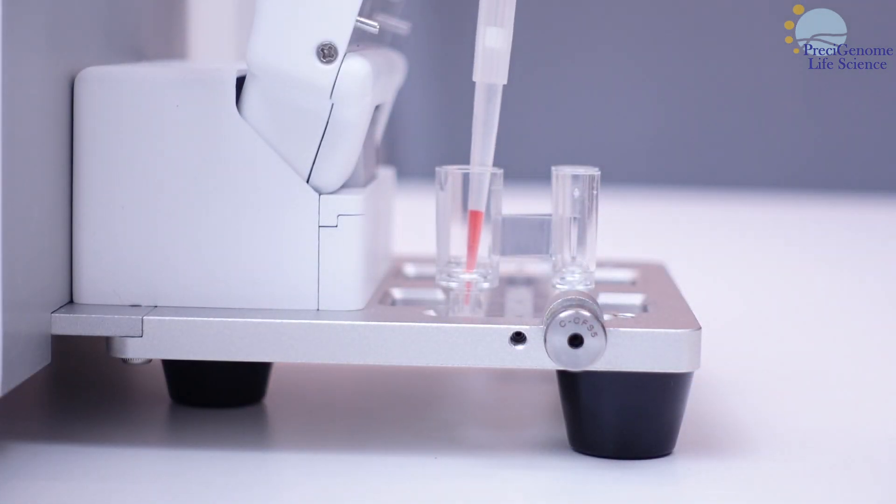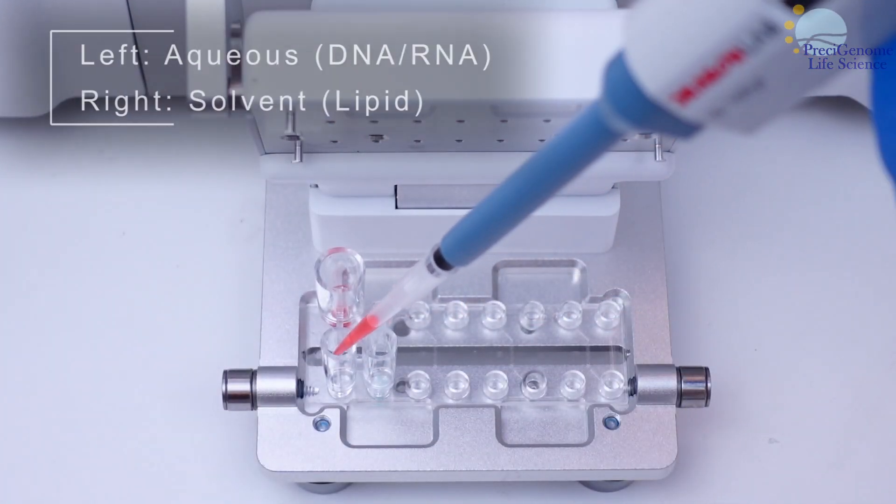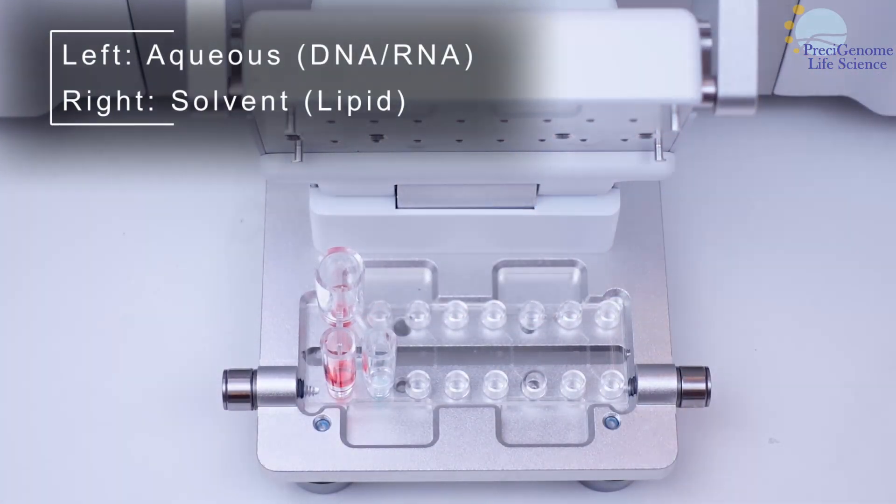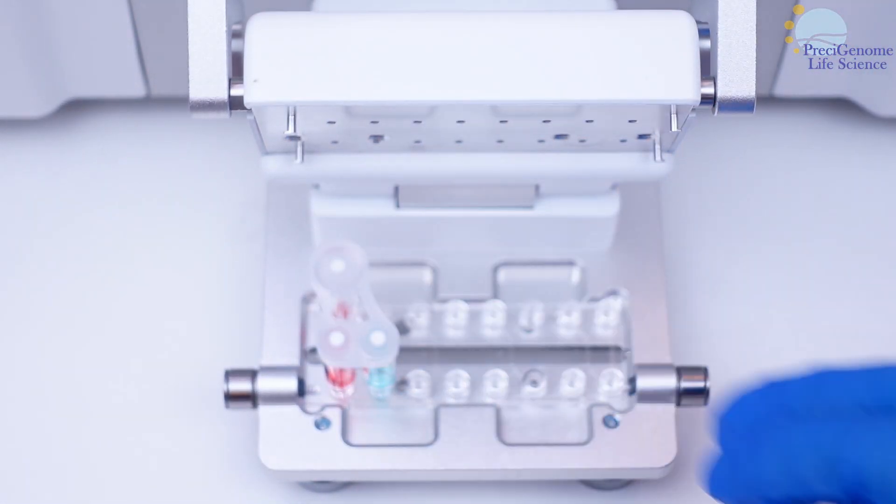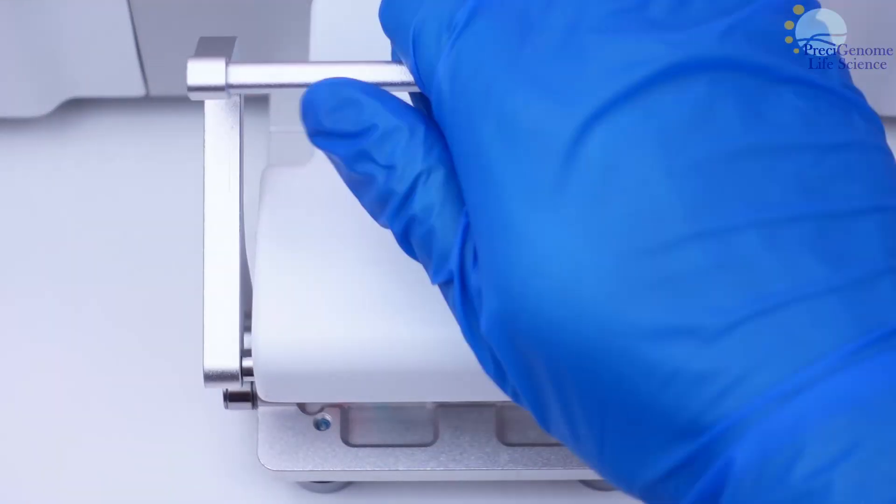When loading the reservoirs, first conduct inline dilution in the collection reservoir's chimney. Next, load the left reservoir with aqueous solution and the right with lipid solution. Cap the reservoirs with a gasket and lock the FlexS to ensure a proper seal.